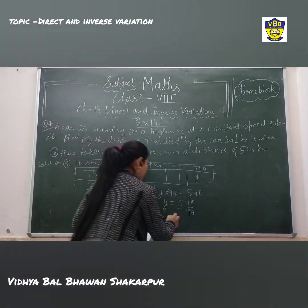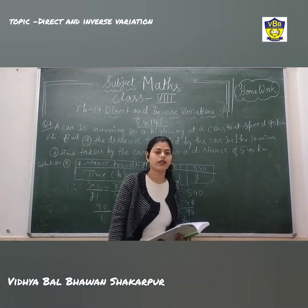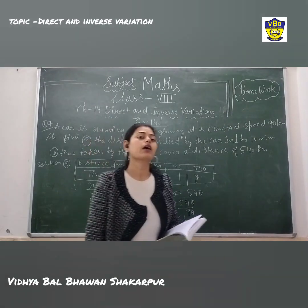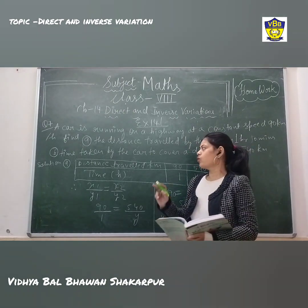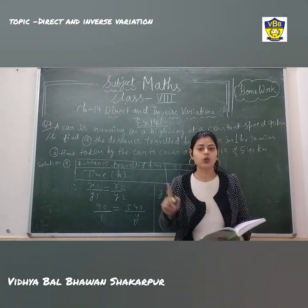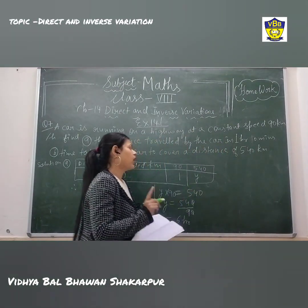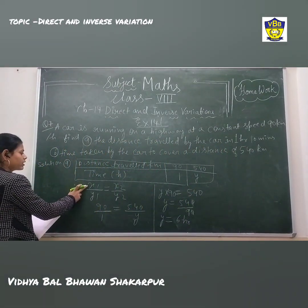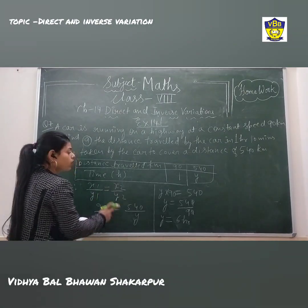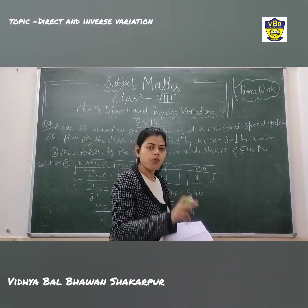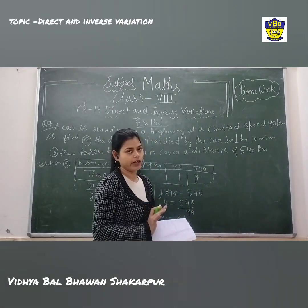So 6 hours is the required answer. In this way you can calculate and find the value — these are very easy questions. First, make the table; after making the table, put in the formula. Then put the respective values in the given formula and you will get the answer by cross-multiplying.